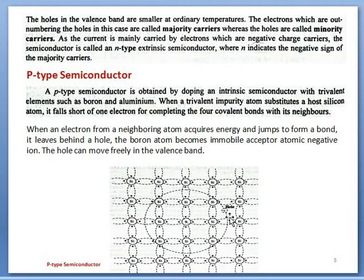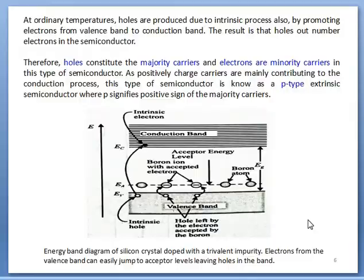Depending on the number of boron atoms, the number of holes produced will increase when nearby electrons jump to complete the 4th valence bond. By increasing the concentration of boron atoms, the concentration of holes will be increased. This same process can also be understood via an energy band diagram. The trivalent atom, by accepting an electron, takes part in the formation of the 4th covalent bond. Since the electron is being accepted by the trivalent atom, it is called an acceptor atom. Since a small amount of energy is required to jump a nearby electron towards the acceptor atom, all acceptor atoms will be located near the top of the valence band — this level is called the acceptor level.